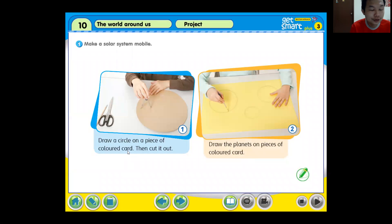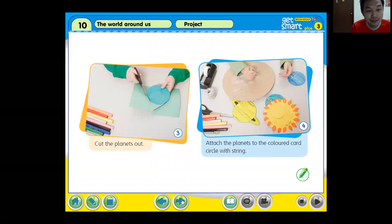Let's see again. You just draw a circle on a piece of colored paper, then cut it out. Then after that you can draw planets on a piece of colored paper as well. Just choose different colored paper. After that, then cut the planets out.